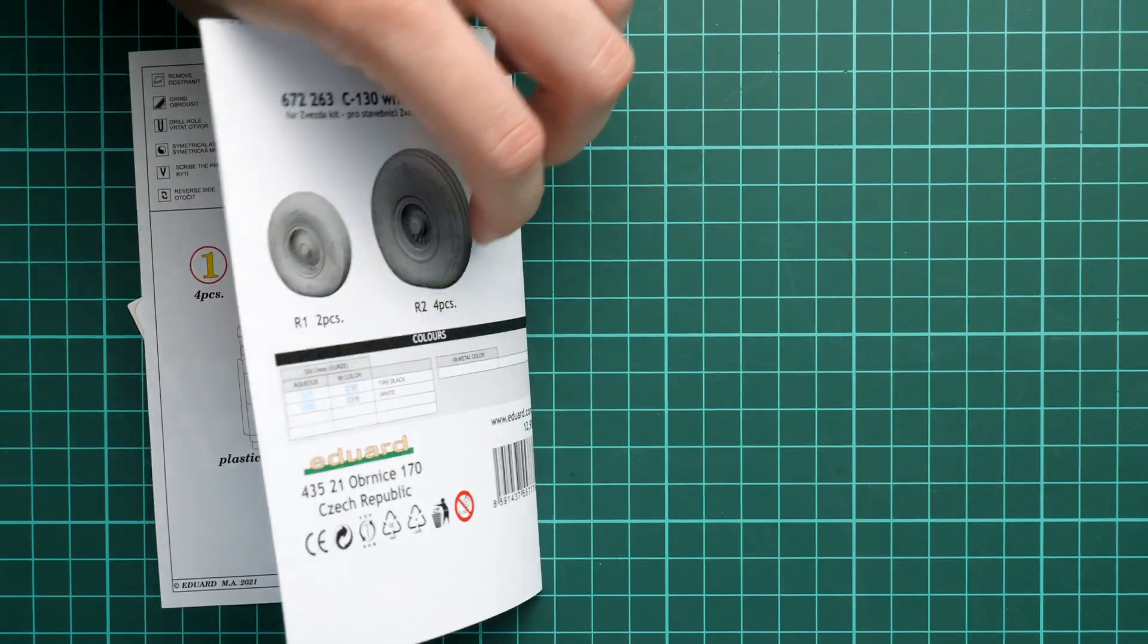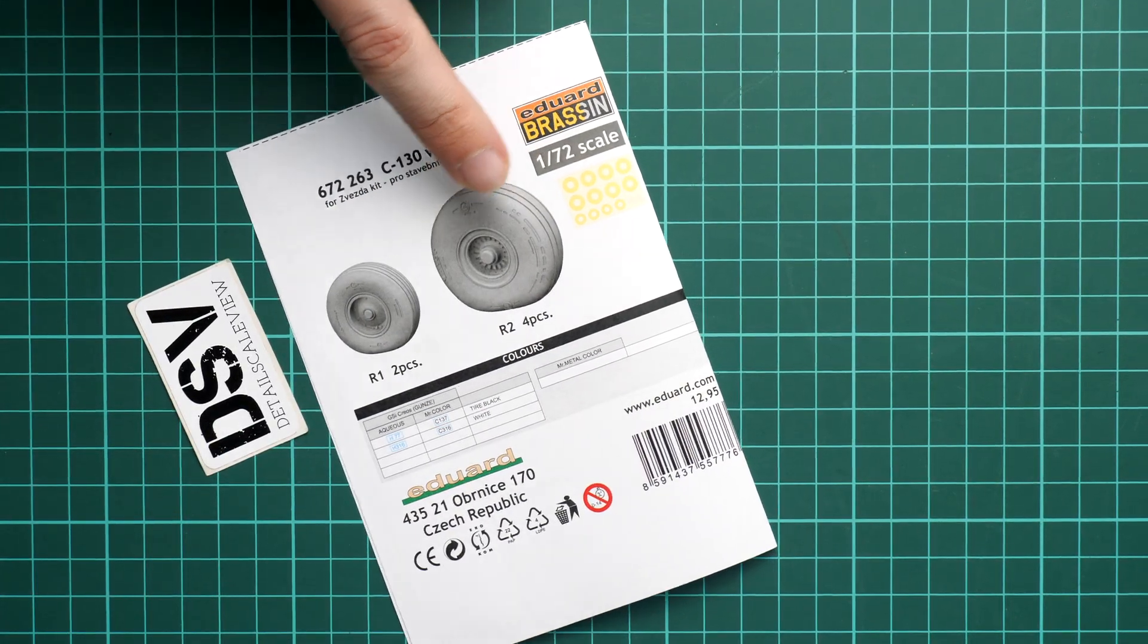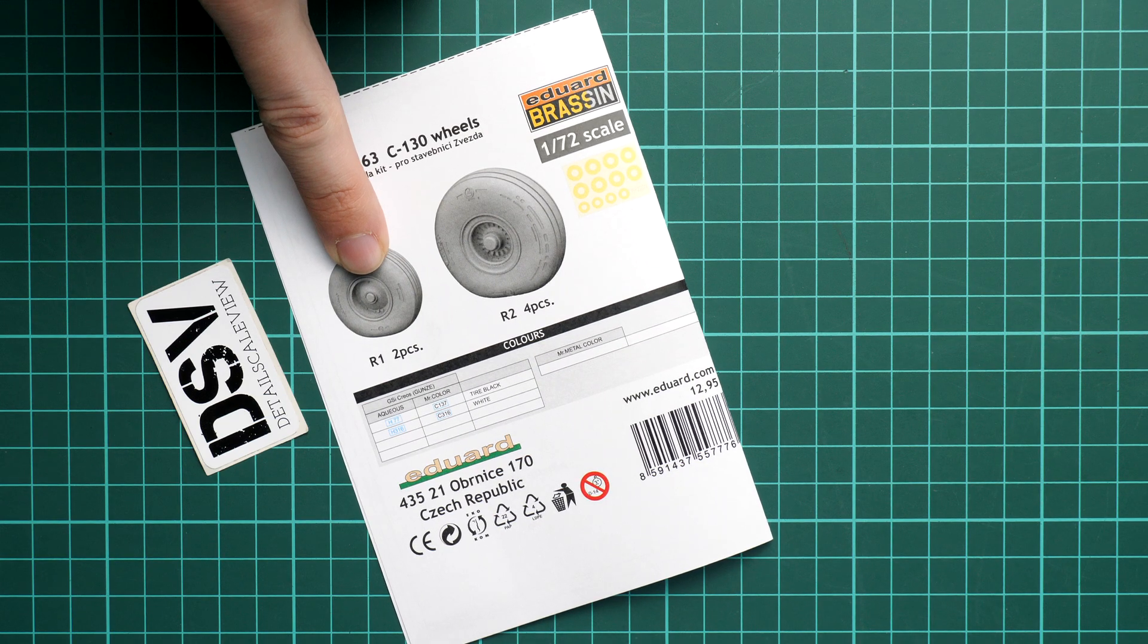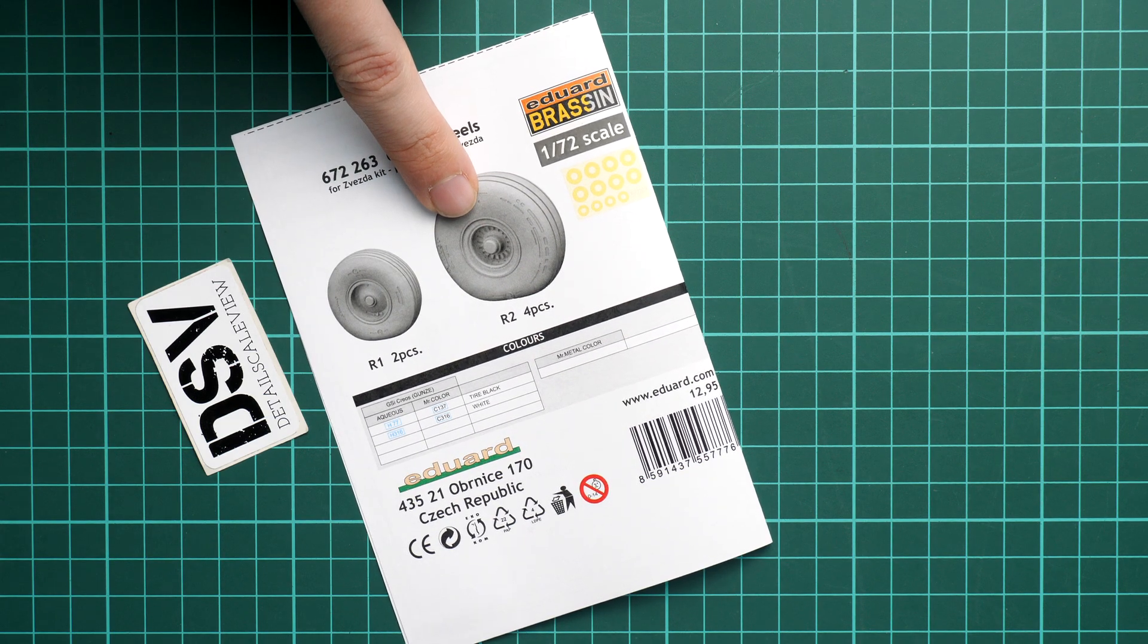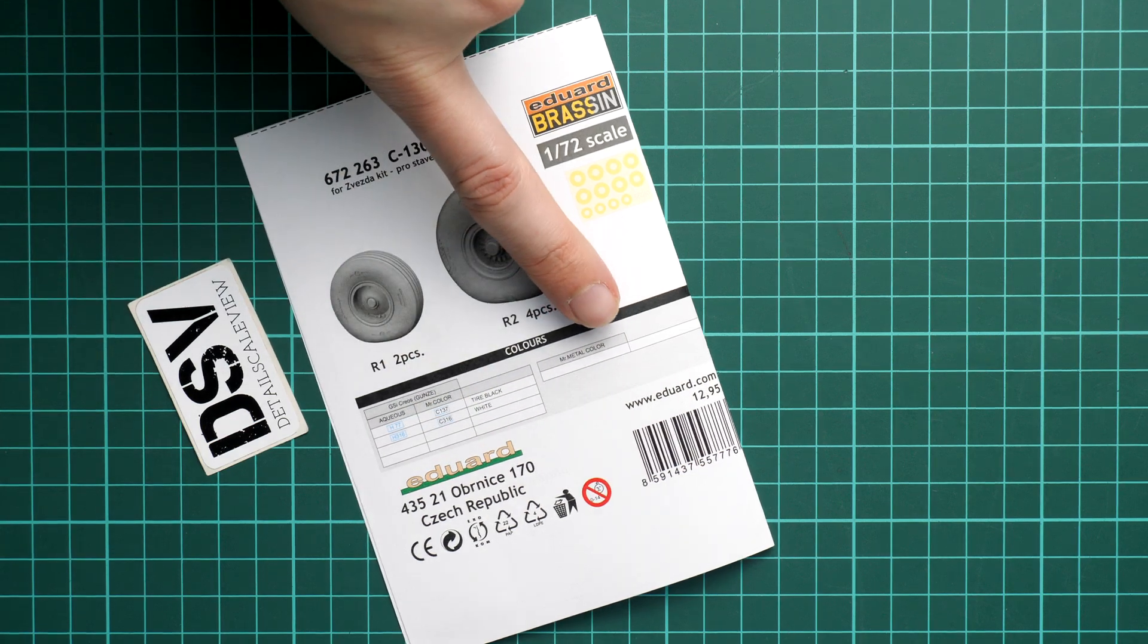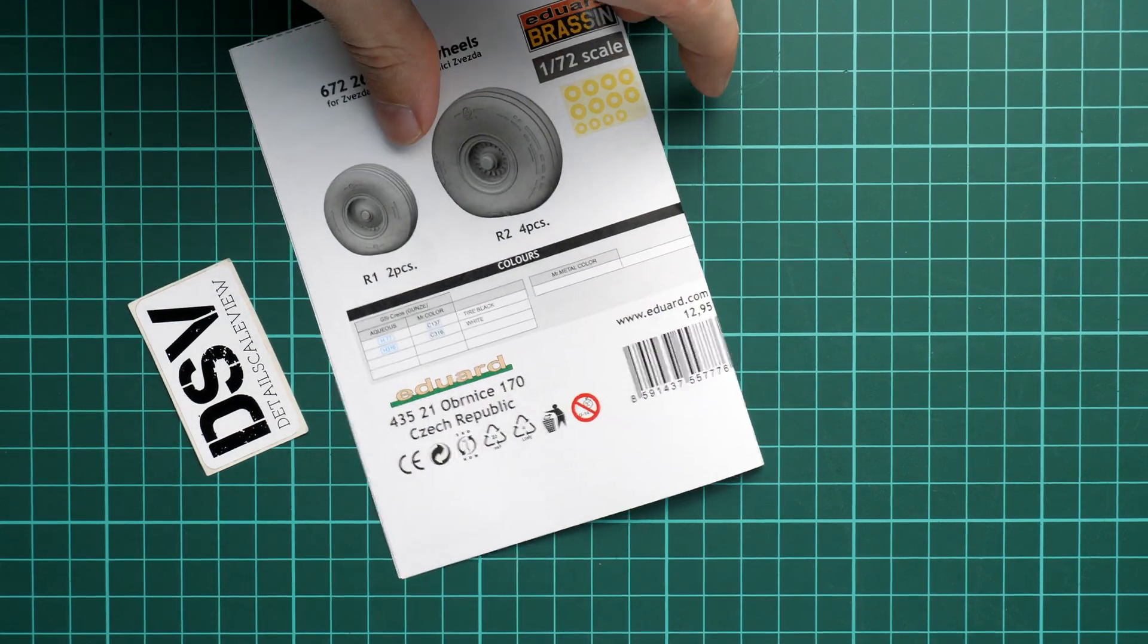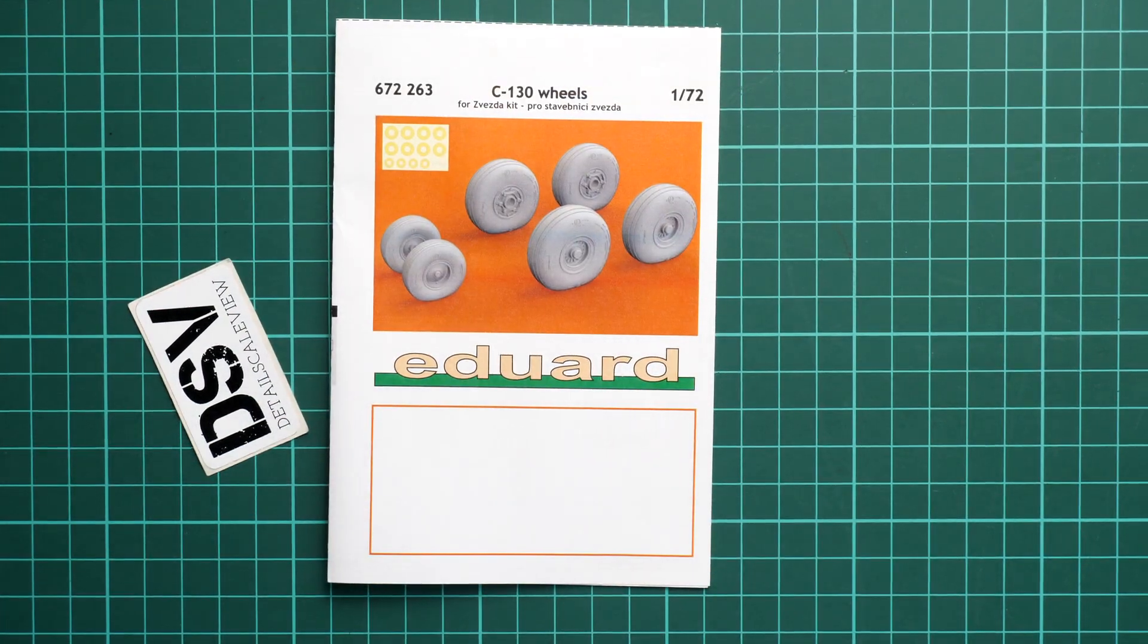And on the last page you will find the parts map. So again, two parts for the front landing gear, four parts for the main landing gear. We also have a paint chart. Price is 13 euros. You can get it on the official Eduard website and it should be already available.